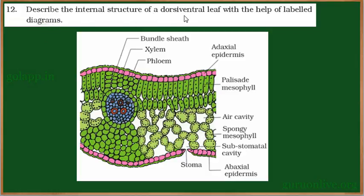Describe the internal structure of a dorsiventrally leaf with the help of a labelled diagram. Such kind of leaf is found in the dicot plants. Dorsal means the upper region and the lower region is called ventral. In dicot plants the leaf is very thin and flat, flat both on the dorsal and the ventral region.